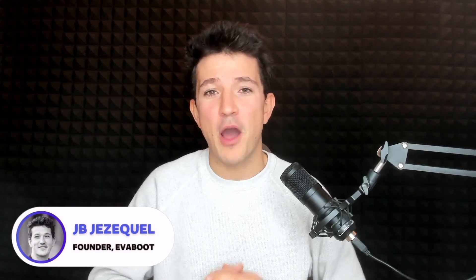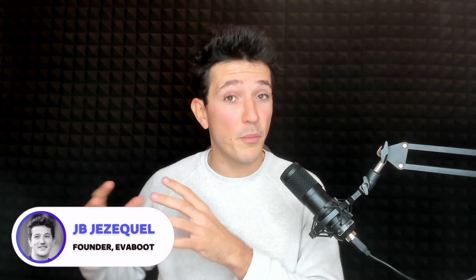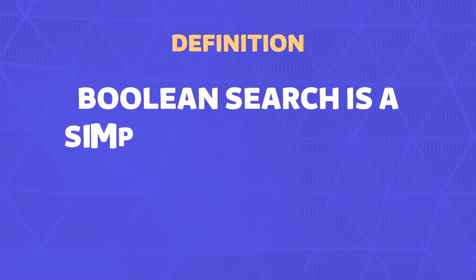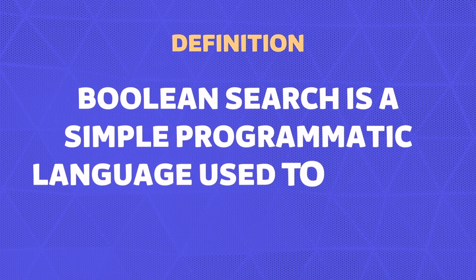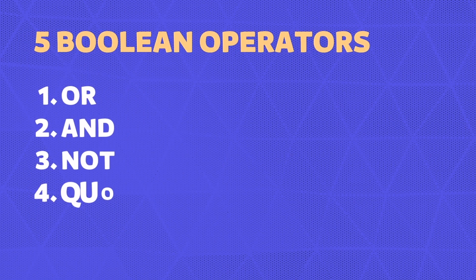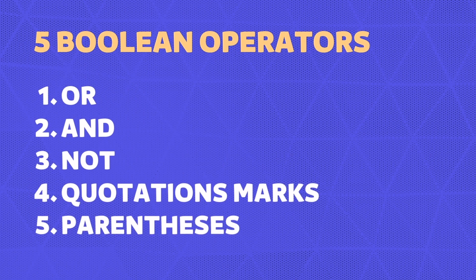What is LinkedIn Boolean Search and how can you use it to find your ideal clients? In this video, I will show you exactly how to use LinkedIn Boolean operators to find new leads for your business. LinkedIn Boolean Search is a simple programmatic language that you can use to build super targeted lead lists using the LinkedIn Search Engine. It uses five different parameters: OR, AND, NOT, quotation marks, and parentheses.